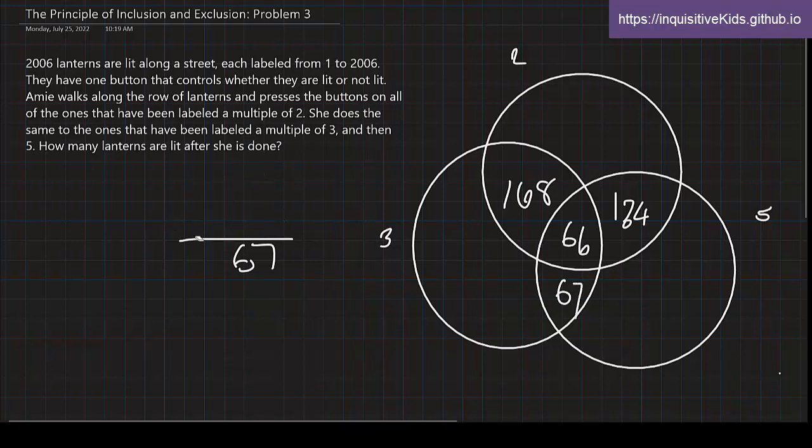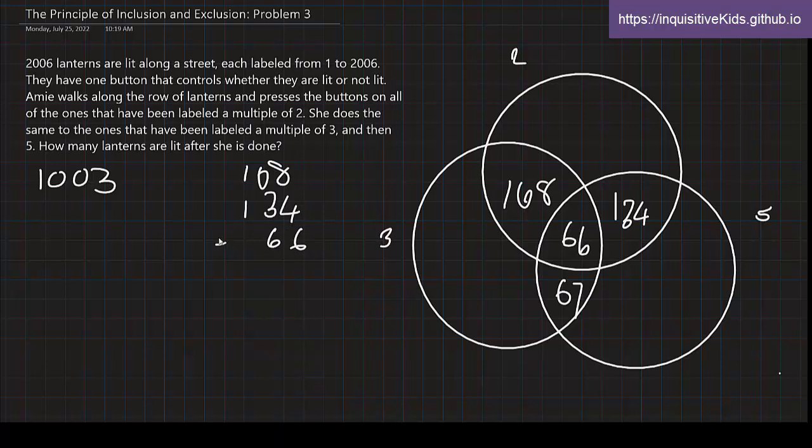Now that we have the overlapping regions, then we can do the non-overlapping regions. 2006 divided by 2 is 1003. So 1003, but we first have to add together 66, 134, and 168. So this is 168, and we subtract 368 from 1003. Our final answer is 635. Over here, this is 635.